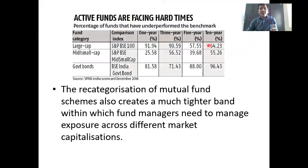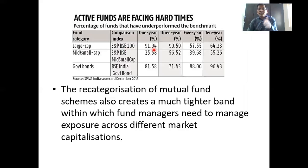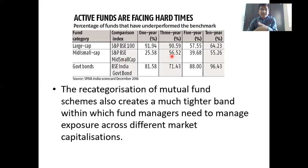We want to understand that index funds are going to be relevant. If active funds, which were justified by their expenses claiming they will outperform the benchmark — that is not possible anymore. In the last one year, 91.94% of large-cap funds underperformed the S&P BSE 100 benchmark. In 3 years, again 90% underperformed; in 5 years, 57%; and in 10 years, 64%. In mid-cap and small-cap funds, 25% of funds underperformed the BSE mid-small-cap index. In 5 years, 56% underperformed, and again 40% underperformed.